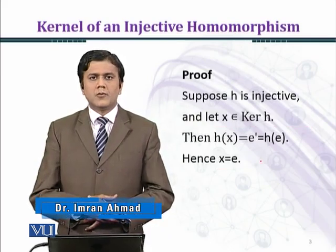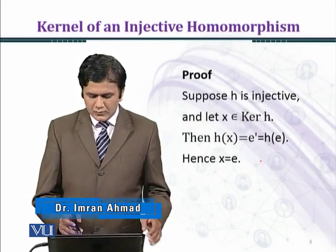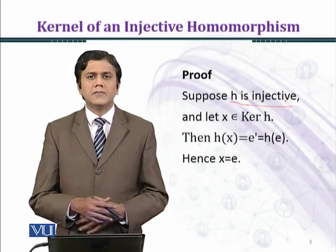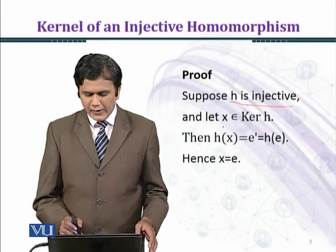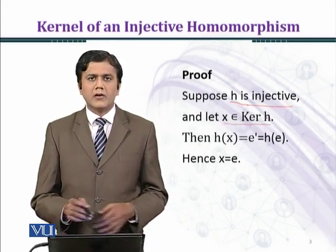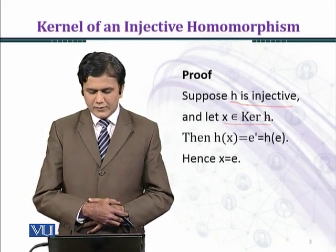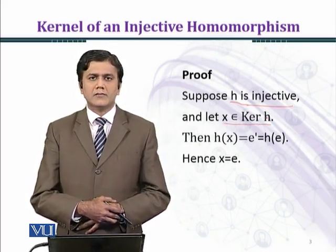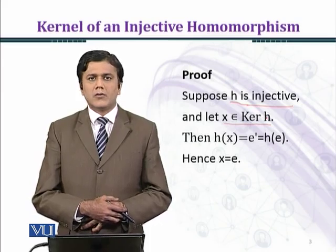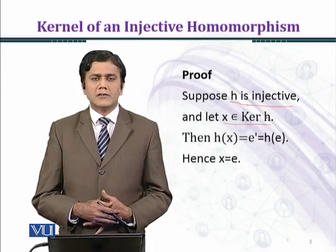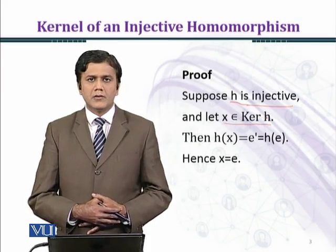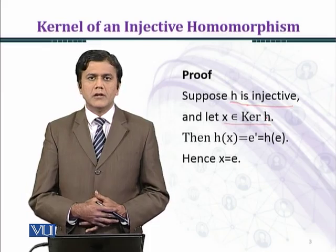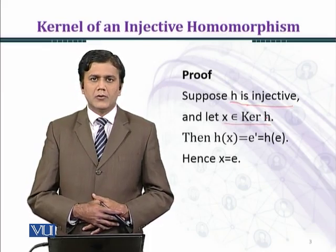Let's prove the theorem. Suppose the homomorphism H is one-to-one, and let x belong to the kernel of H. If x belongs to the kernel of H, then under H, the image of x will be the identity element of G prime, which we denote by E prime.